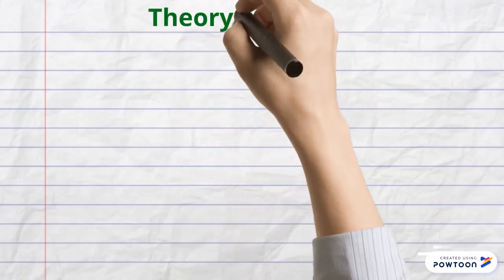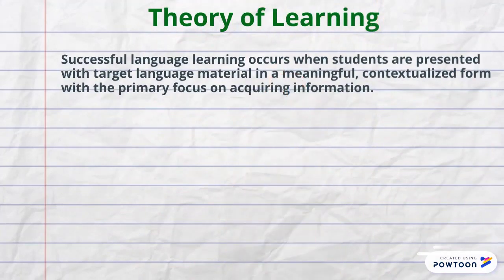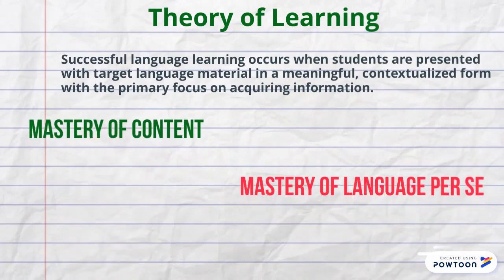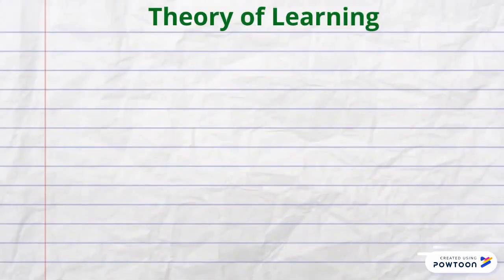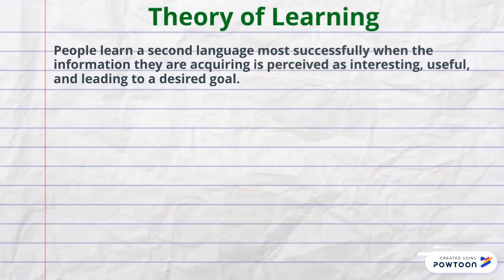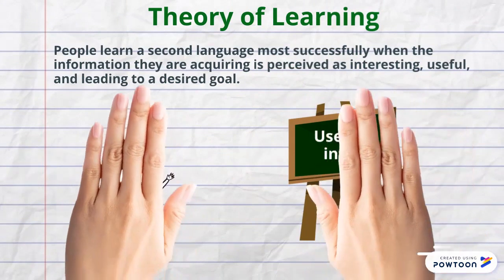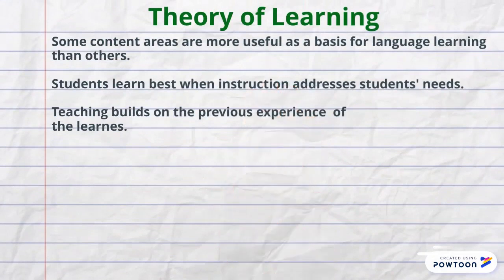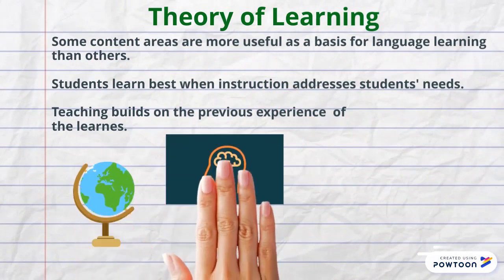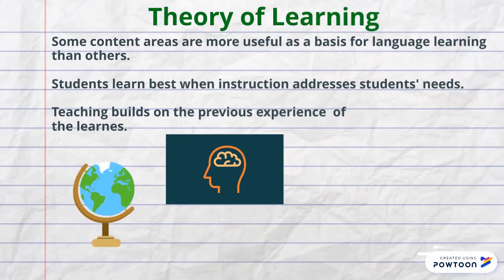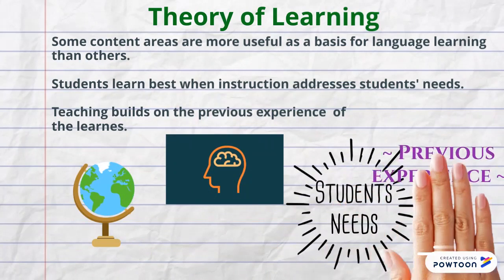Theory of Learning: Content-based instruction is based on the underlying assumption that successful language learning occurs when students are presented with target language material in a meaningful, contextualized form with the primary focus on acquiring information. People learn a second language most successfully when the information they are acquiring is perceived as interesting, useful, and leading to a desired goal. Other assumptions include that some content areas are more useful as a basis for language learning than others — for example, geography and psychology — or that students learn best when instruction addresses their needs and builds on previous experience.